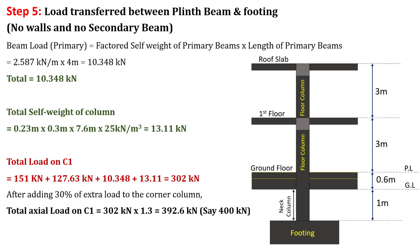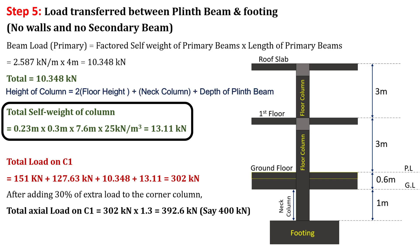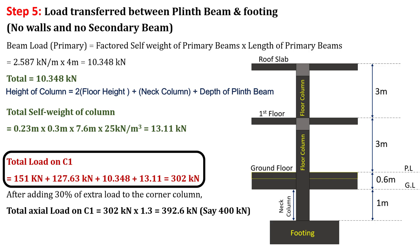The load transferred between plinth beam and footing includes only the load due to primary beams, which is 10.348 kN. Total self-weight of column = area of cross section (0.23 x 0.3) x height (7.6 m) x density of RCC (25 kN/m³) = 13.11 kN. The total load on column 1 = 151 + 127.63 + 10.348 + 13.11 = 302 kN.